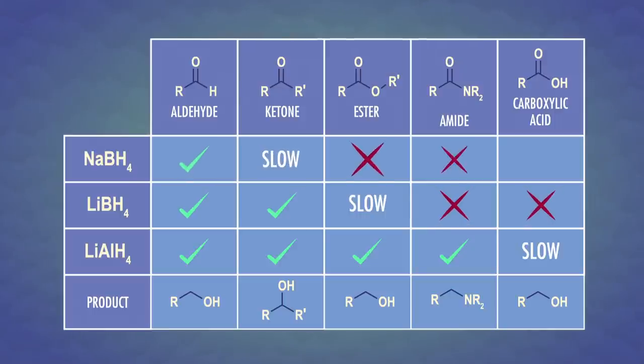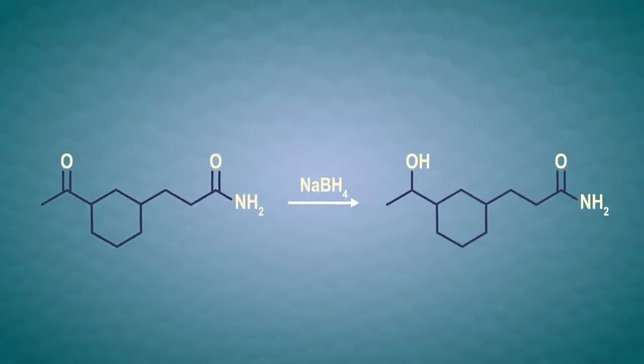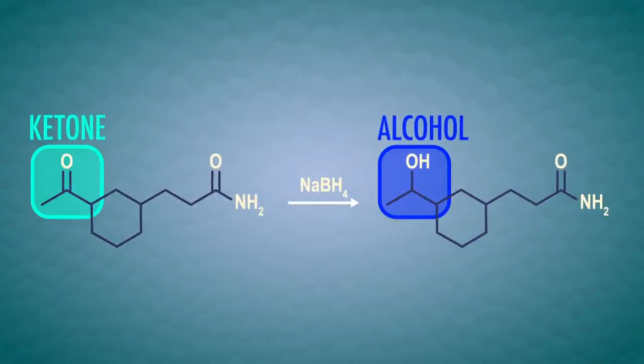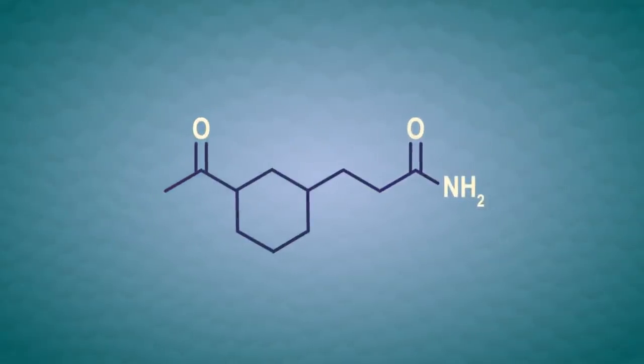Sodium borohydrides can reduce aldehydes and ketones, but it's speediest with aldehydes. Taking that molecule with two functional groups from before, sodium borohydride would be the perfect choice if we want to reduce the ketone but not the amide. But none of these reducing agents will help us reduce the amide but not the ketone.